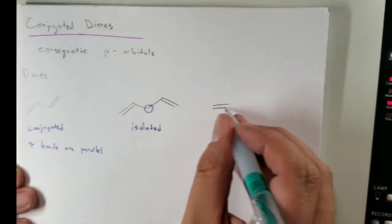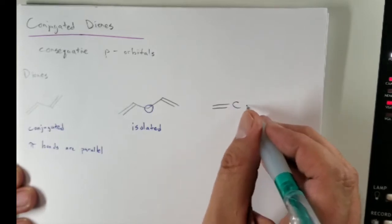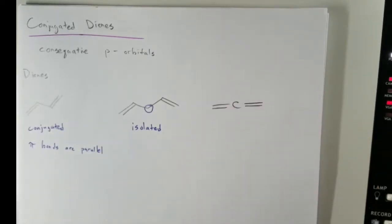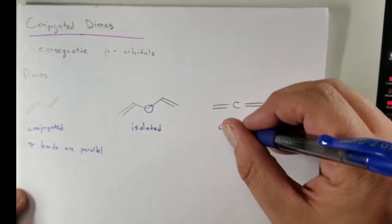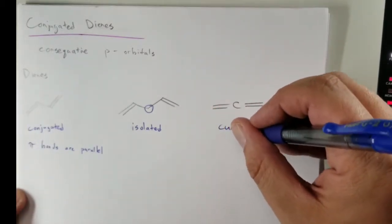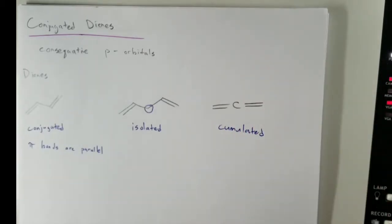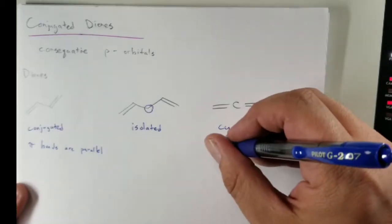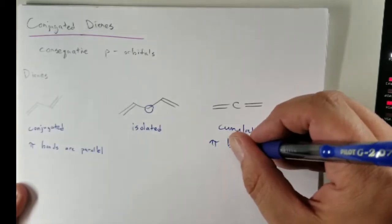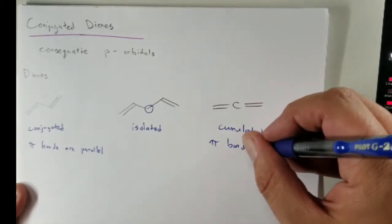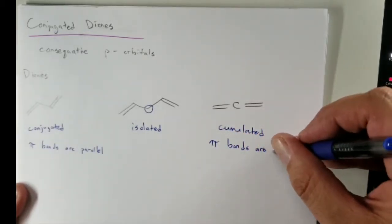The last case, which is actually not super common in organic compounds, is where they are accumulated or adjacent. The pi bonds are orthogonal — meaning perpendicular.